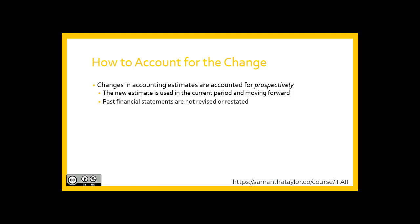When you think about this, it's because management preparing the financial statements did the best they could with the information available when they did the financial statements last year — and that's all you can do. An estimate by nature is going to be wrong because it's a best guess. It'd be fabulous if it were right, but it's just the best we can do with current information. So next year, when we're reevaluating and better information changes, we use that. On a go-forward basis, just imagine all the work required if we had to keep going back every time we got more information for a number we know will be wrong anyway.